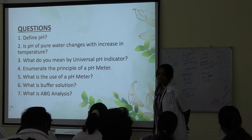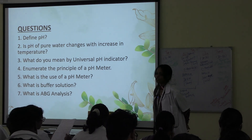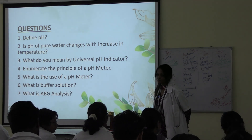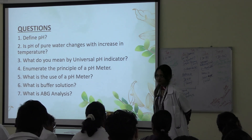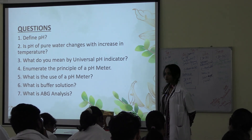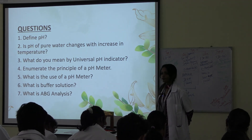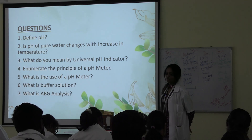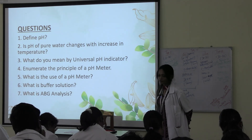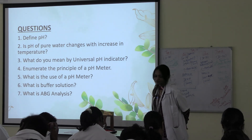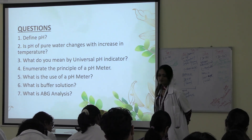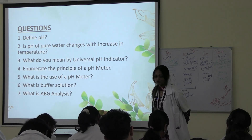What is ABG analysis? ABG analysis is a test that measures the partial pressure of carbon dioxide, partial pressure of oxygen, and the pH of arterial blood. It can also measure oxyhemoglobin in the blood.